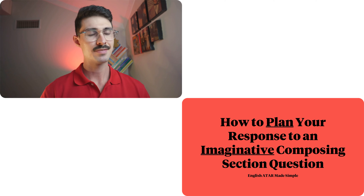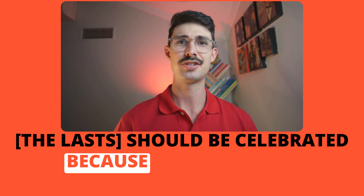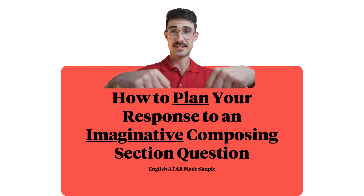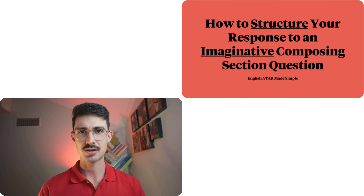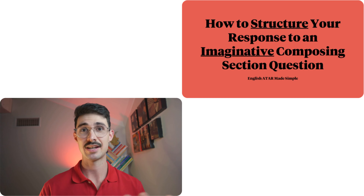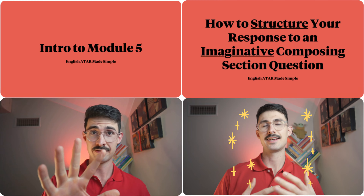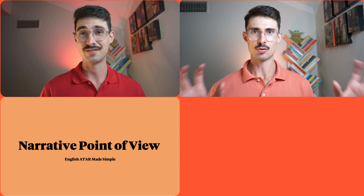Hello and welcome to the last, if not one of the last, planning lessons in AIMS. At this stage of the course there will be a bunch of lasts, and I think they should be celebrated because you've come a long way since starting. This lesson has two prerequisites: the previous lesson on how to structure your response to an imaginative composing section question, and the intro to module five. I'd also highly recommend you re-watch the lesson on narrative point of view in module two.